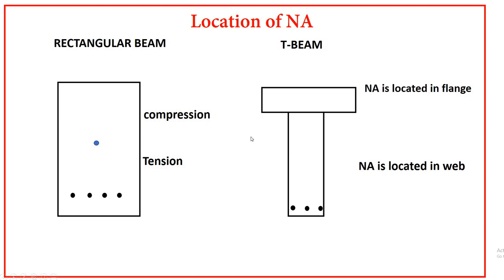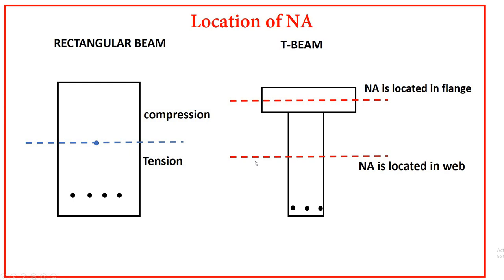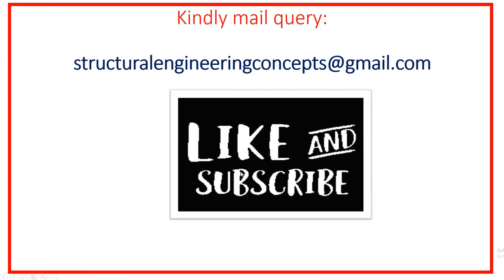The center of gravity of a rectangular beam is above the neutral axis for compression and below for tension. In a flange beam, the neutral axis is either located in the flange of the beam or in the web. This should clarify the basic difference between the T-beam and rectangular beam.